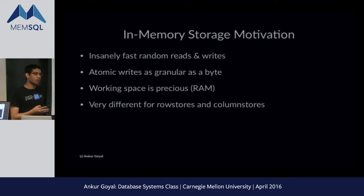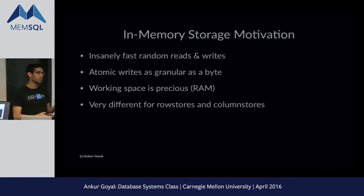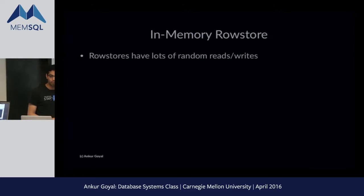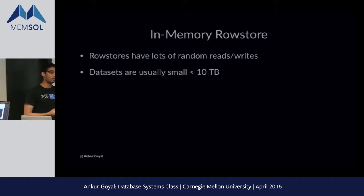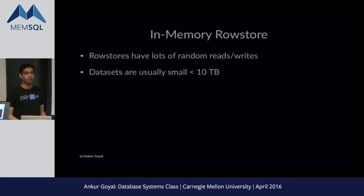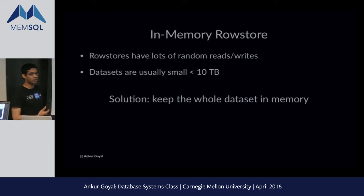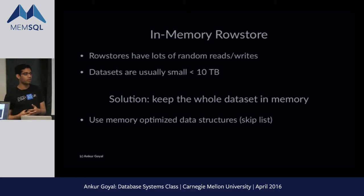In-memory storage gives you a very different set of advantages for row stores and column stores, because of the different workloads involved. For in-memory row stores, row stores have a lot of random reads and random writes — they're basically built for that. Data sets for row stores are usually pretty small; they tend to track one row per item and are generally less than 10 terabytes, even for most Fortune 500 companies. So the solution is to keep the whole data set in memory.